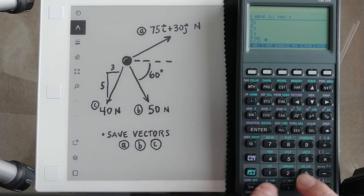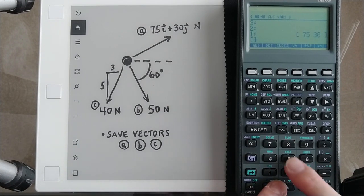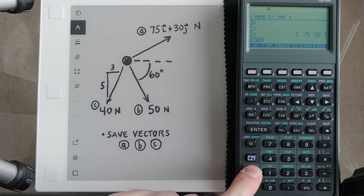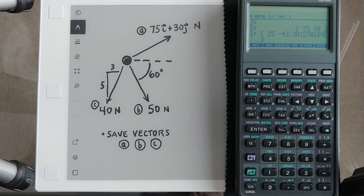So we're going to do 75 in the i direction, 30 in the j, put that on the stack. Then we have 50 newtons at negative 60 degrees. Notice it just dynamically converts that to rectangular.